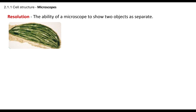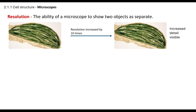Resolution is the ability of a microscope to show two objects as being separate. If I take my chloroplast diagram and increase the resolution, I can see increased detail — the detail of the grana, of the lamellae, of the stroma is much clearer when I increase the resolution.